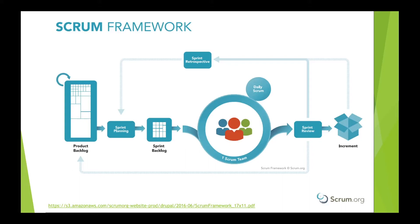A sprint review is held at the end of the sprint, which allows the product owner to review the results of the increment and accept product backlog items that meet the definition of done. Based on what was learned during the sprint, adjustments to the plan can be applied, setting the stage for the next sprint planning event. Prior to starting the next sprint, the team will conduct a sprint retrospective to review how the team is working together and applying the Scrum framework, with the intent of continually improving their efficiency and quality.